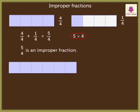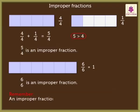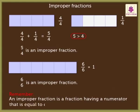Annie has one more grid. She has coloured all the six parts of the grid — that is, the entire grid. We can write it as six upon six, which is equal to one. Six upon six is also an improper fraction. Remember, an improper fraction is a fraction having a numerator that is equal to or greater than the denominator.